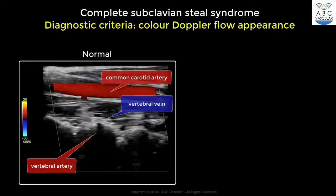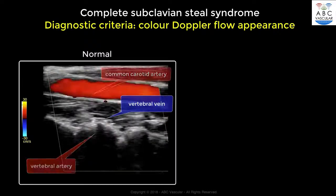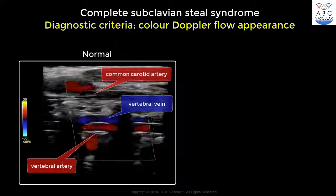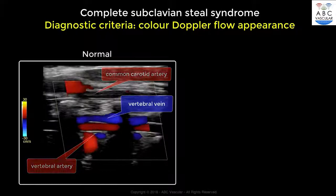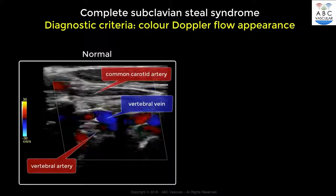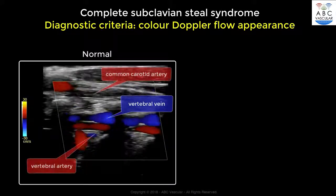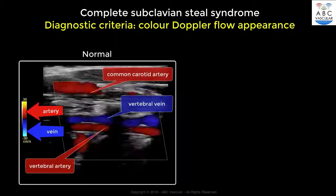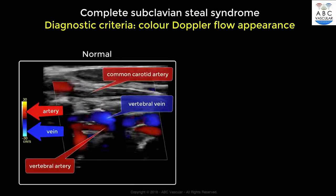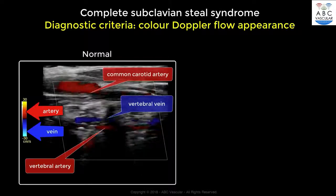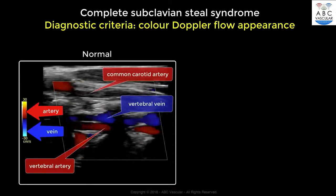In the absence of pathologies, the common carotid artery and the ipsilateral vertebral artery present with the same colour Doppler flow appearance. Thus, if red on the colour bar indicates arterial flow, both the common carotid artery and the vertebral artery will appear in red, while the vertebral vein will appear in blue.